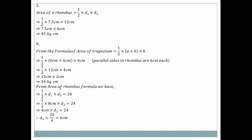Using the diagonal formula for the rhombus: area = half × diagonal one × diagonal two = 24 cm². With diagonal one = 8, we get: half × 8 × diagonal two = 24, so 4 × diagonal two = 24, giving diagonal two = 6 centimeters.